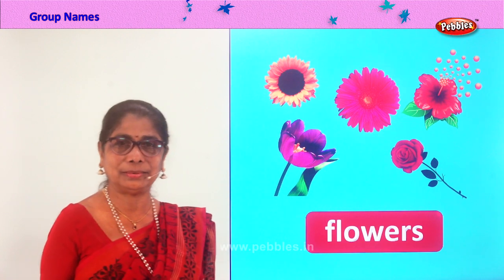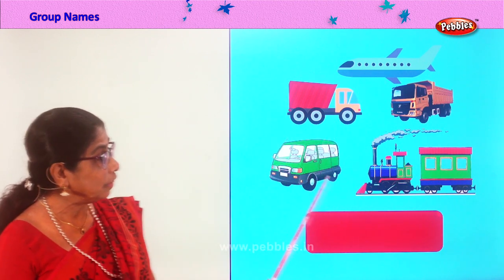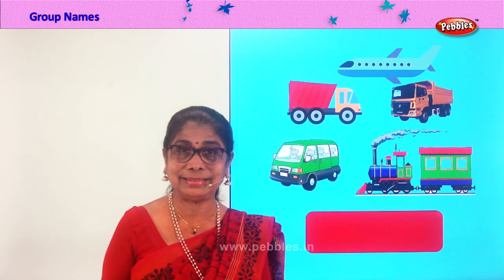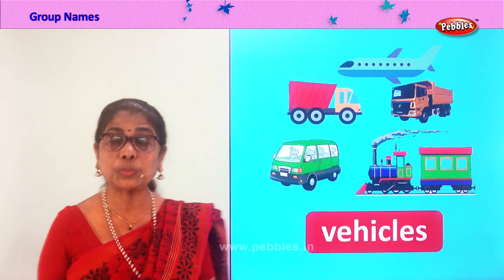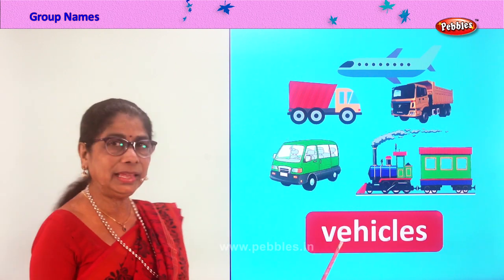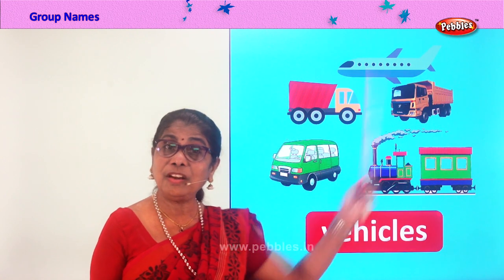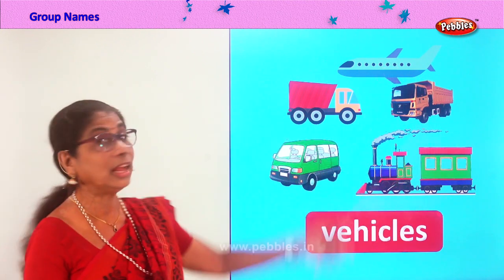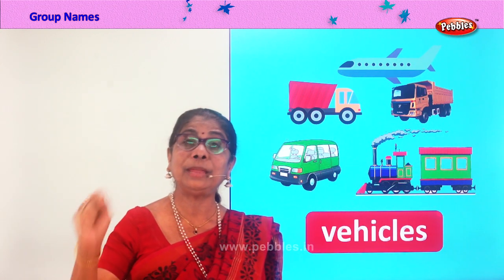Flowers come in different colors. Good. Let's go on to another group. You have an airplane, a truck, a van, a train, and a big lorry carrying things. What is the group name for all this? Vehicles! Spell vehicles: V-E-H-I-C-L-E-S. The train runs on the rail, others run on the road, and the airplane flies in the sky. All of them have one group name: vehicles.